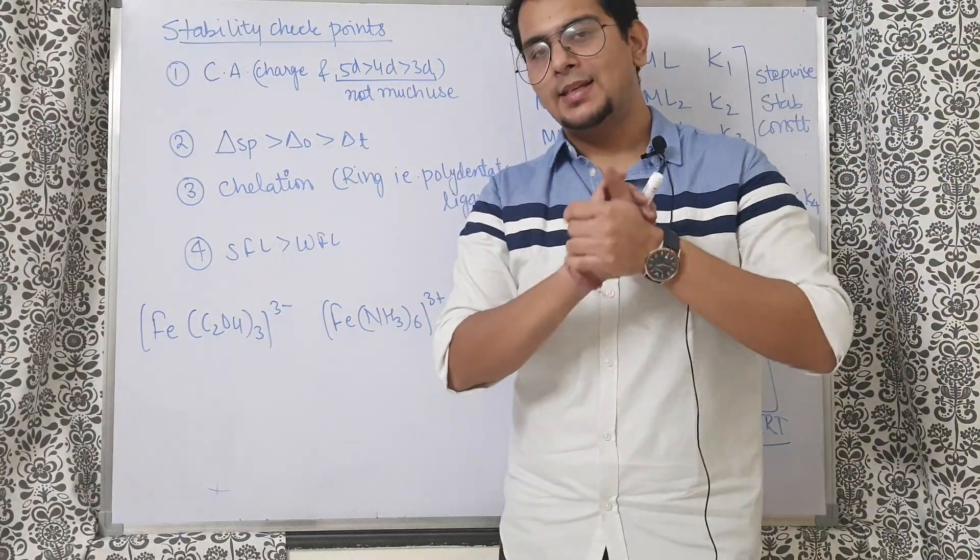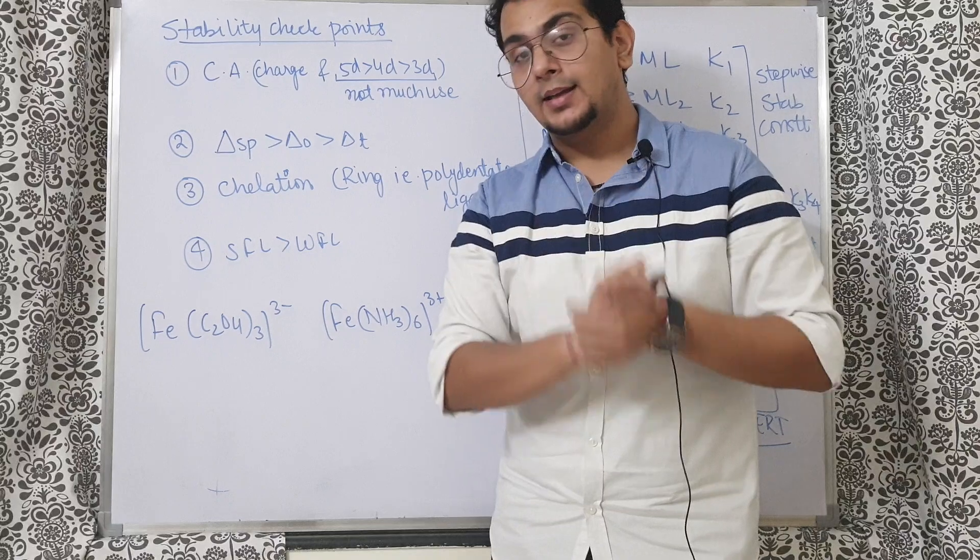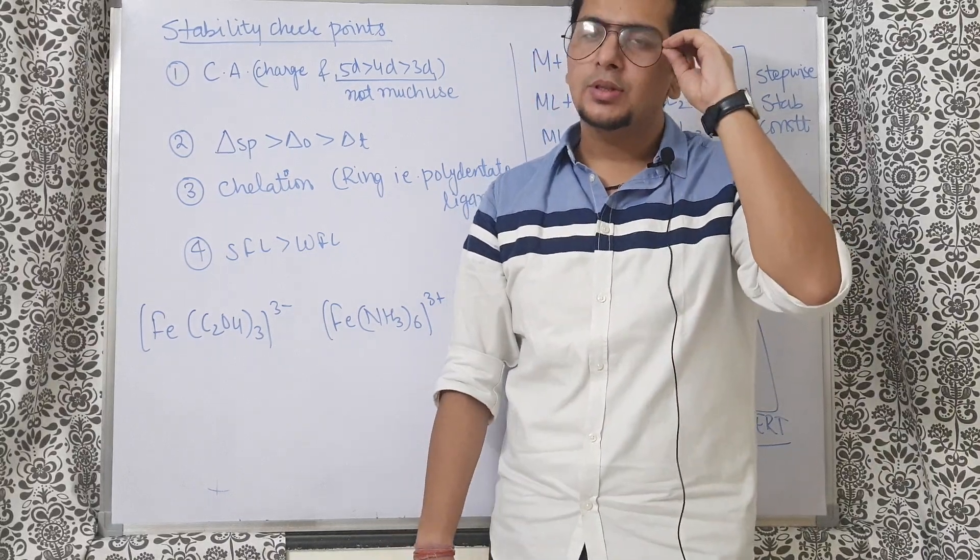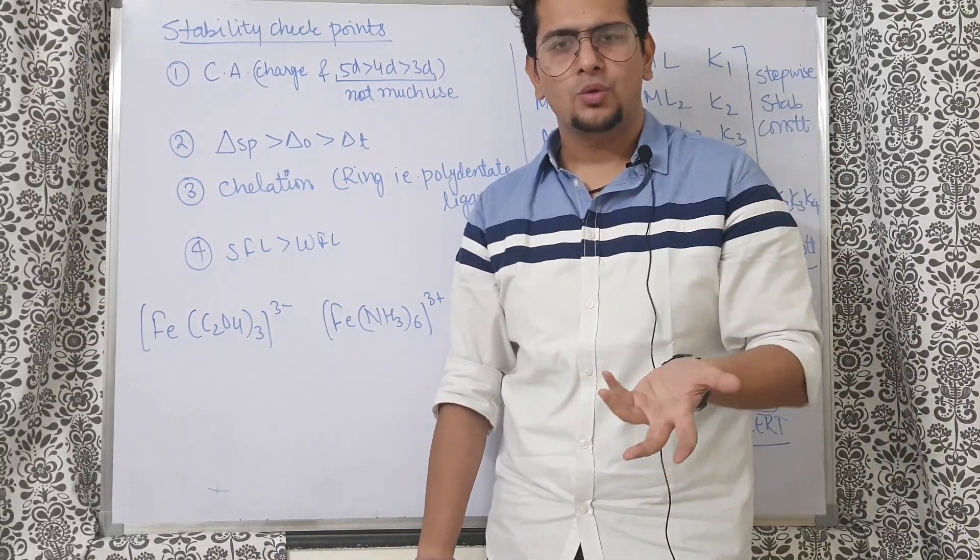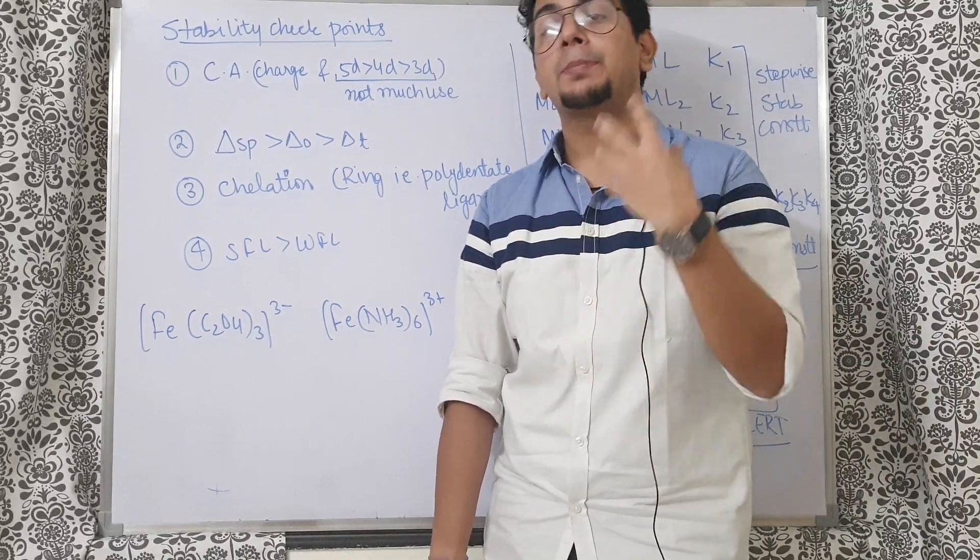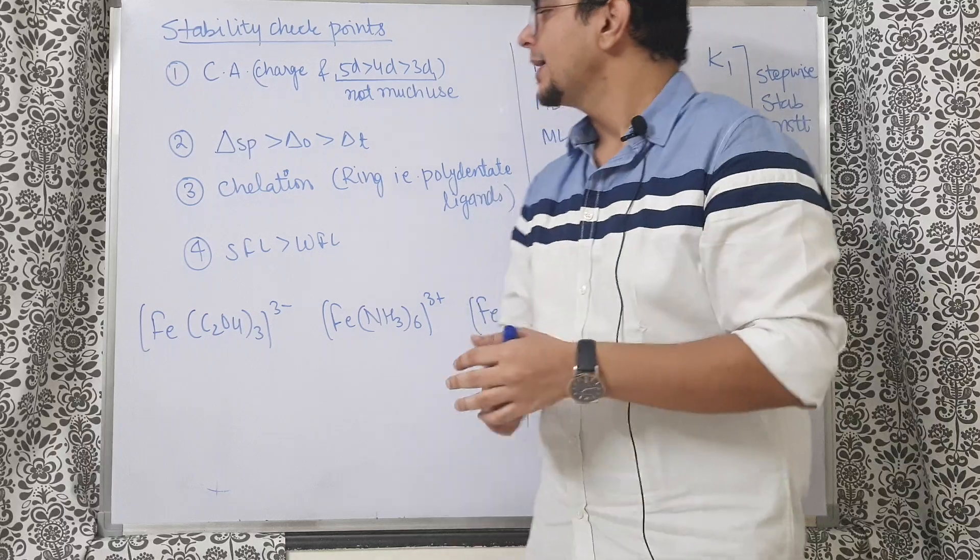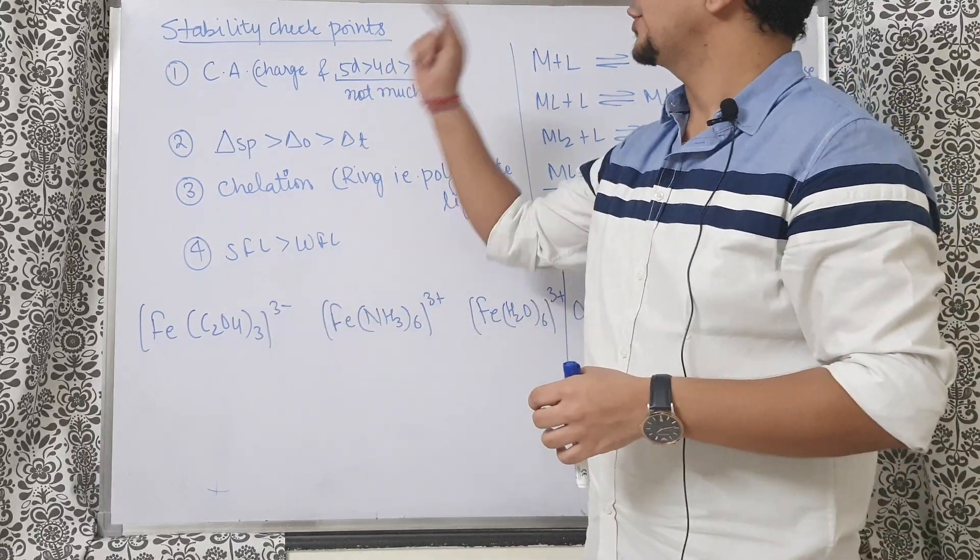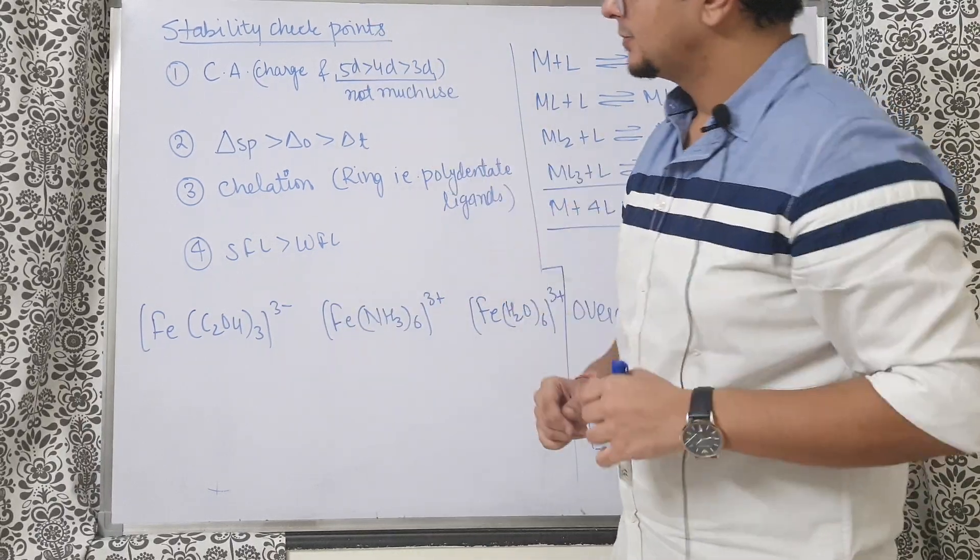Now we are going to compare the stability of complexes. I will repeat again that chemistry is not about just knowing the factors that anyone can know. Chemistry is about knowing which factor has to be applied when and at what priority. You have to follow the exact same sequence for the stability checkpoint.